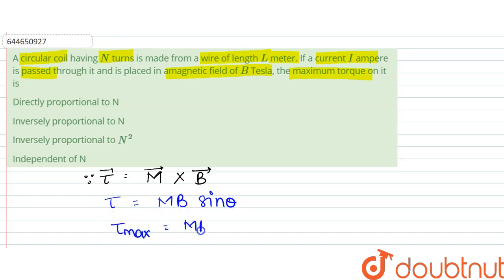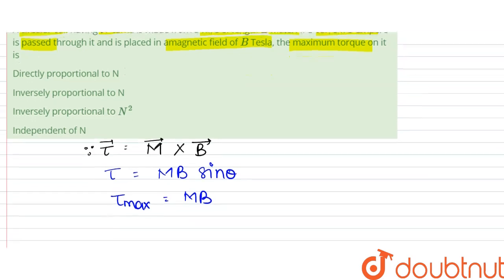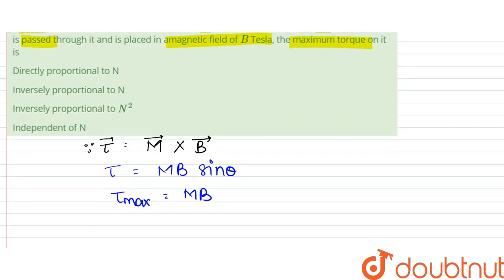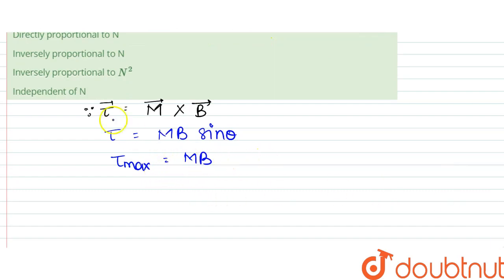...would be equal to M B when sin theta equals 1, when theta is 90 degrees, when they are perpendicular. Since magnetic moment is represented as number of turns times the current times the area.